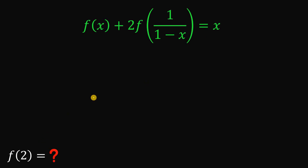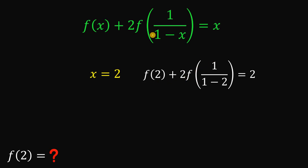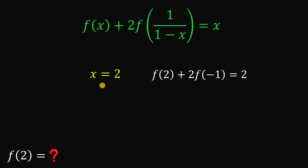Our solution looks something like this. First, let x be equal to 2, because we want f of 2. So if we replace all x with 2, we have f of 2 plus 2 times f of 1 over 1 minus 2 equals 2. Simplifying, 1 minus 2 is negative 1, so 1 over negative 1 is negative 1. So if x equals 2, we have f of 2 plus 2 times f of negative 1 equals 2.